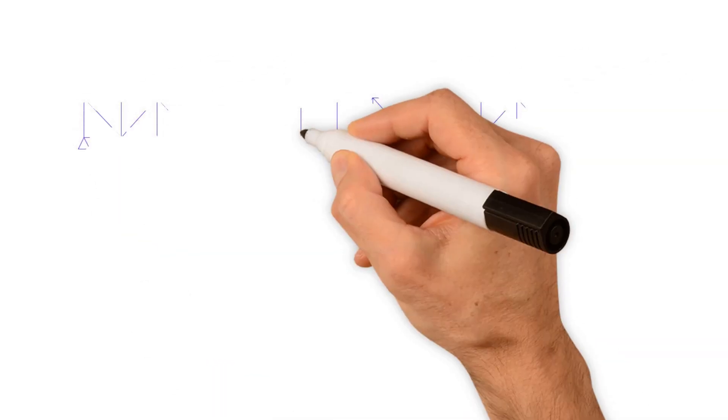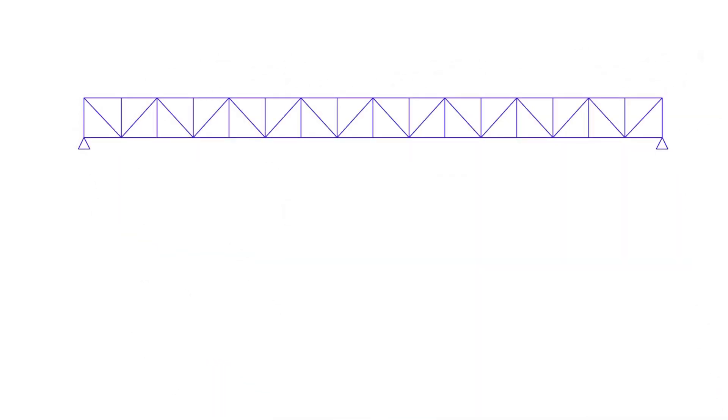Today we'll be looking at easy formulas to design long trusses. Let's imagine we have a very long span of 22.5 meters. Let's assume there is a roof that we're going to support on this.